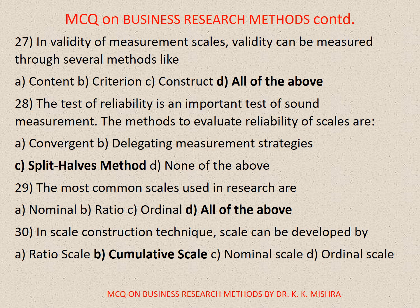Question number twenty-nine. The most common scales used in research are. Options are: A. Nominal, B. Ratio, C. Ordinal, D. All of the above. Correct option is D. All of the above.